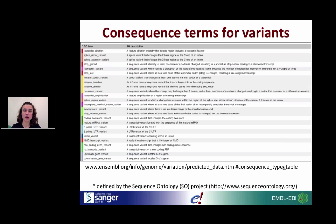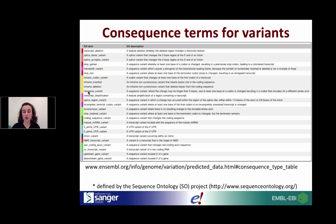This is a summary of some of the consequence terms you can get with VEP. These are not defined by Ensembl — they come from a consortium called Sequence Ontology, which provides a standard nomenclature for variants. Some variants can be intronic, others fall at the five prime UTR, others are missense, and so on. This is the kind of classification you get when you use the Ensembl VEP to annotate your own variants.